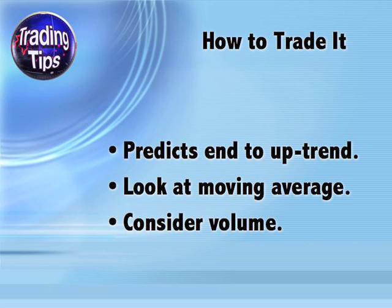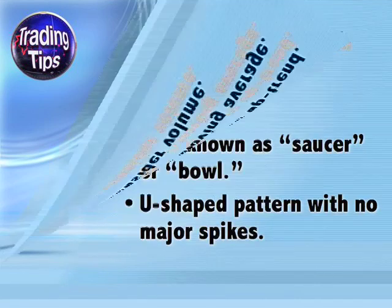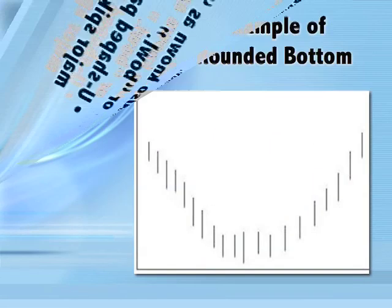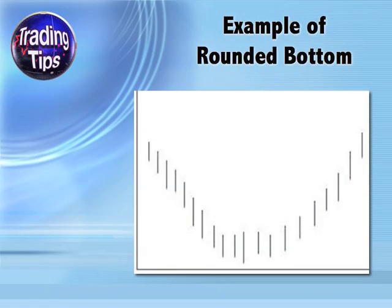The rounded top's opposite is the rounded bottom. Since the rounded top is bearish, the rounded bottom is bullish. Rounded bottoms are also known as saucers or bowls, and they are U-shaped patterns — the inverse of a rounded top — with no major spikes to disturb the formation. Here's an example of a rounded bottom.